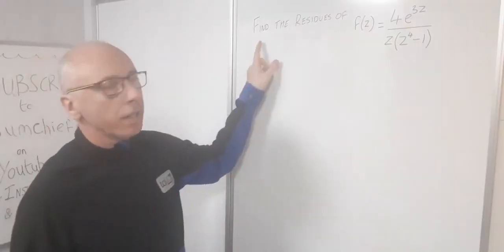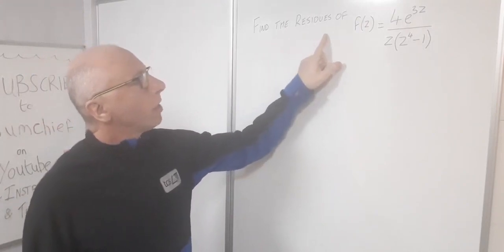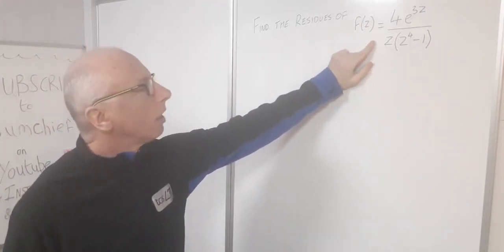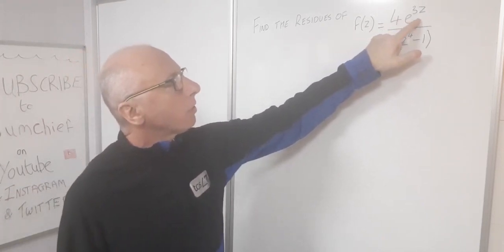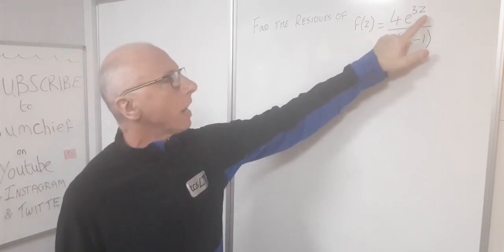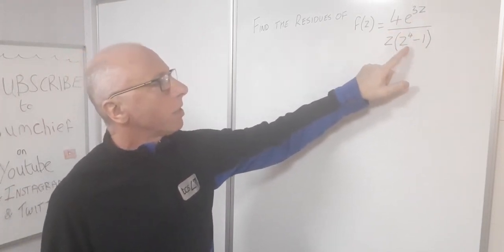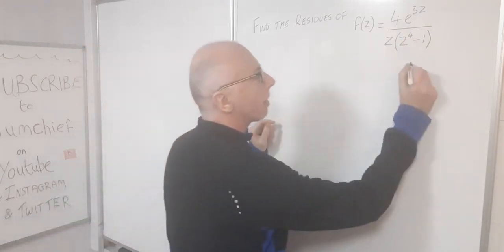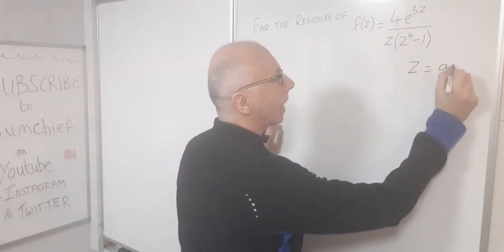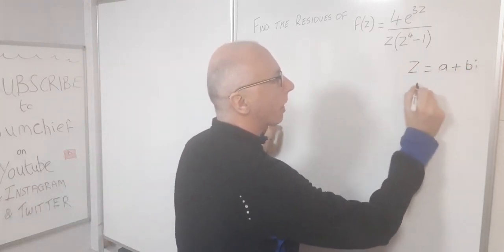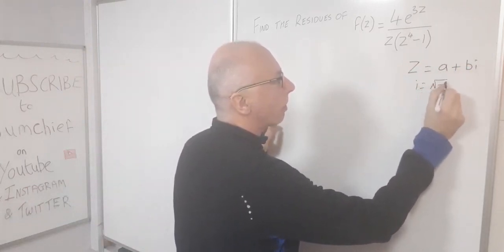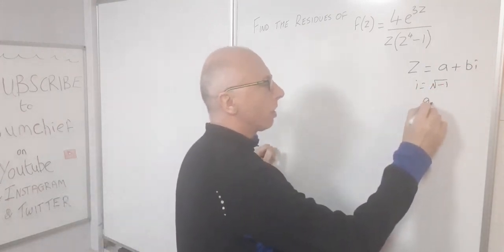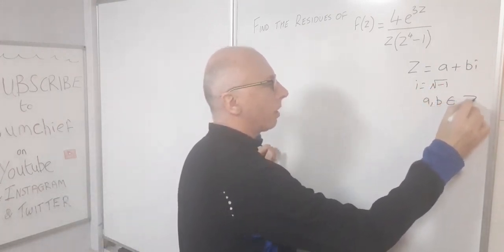We are going to do some complex analysis and in particular we are going to find the residues of this complicated looking function: 4 times the exponential function raised to 3z, over z times (z^4 minus 1), where z is of the form a plus bi, where i is the square root of minus 1, and a and b are integers.